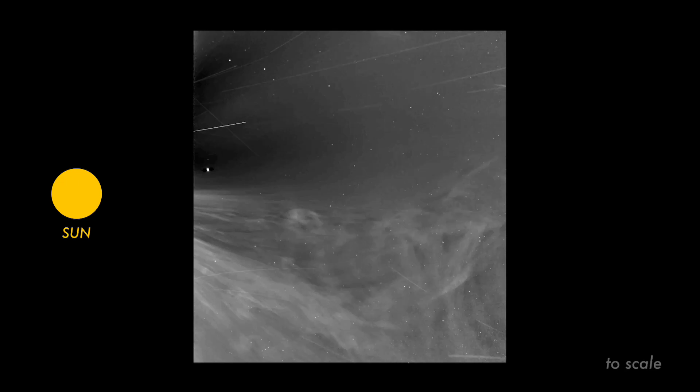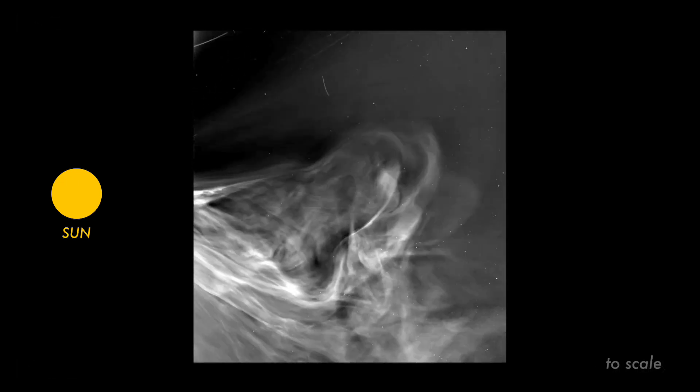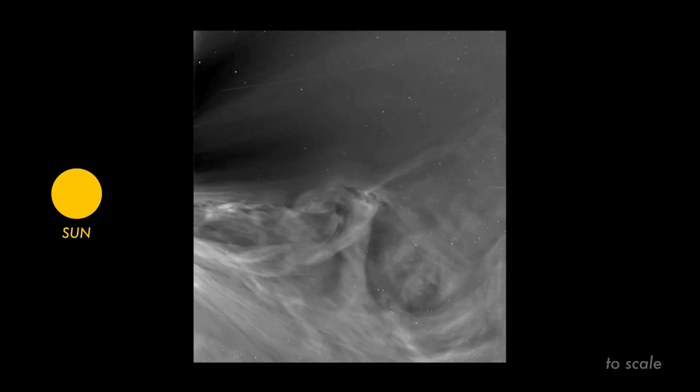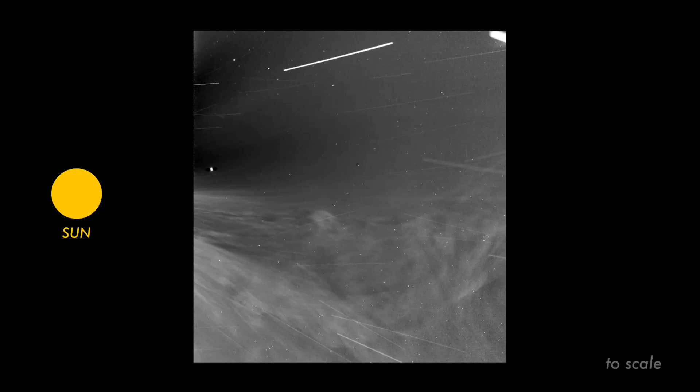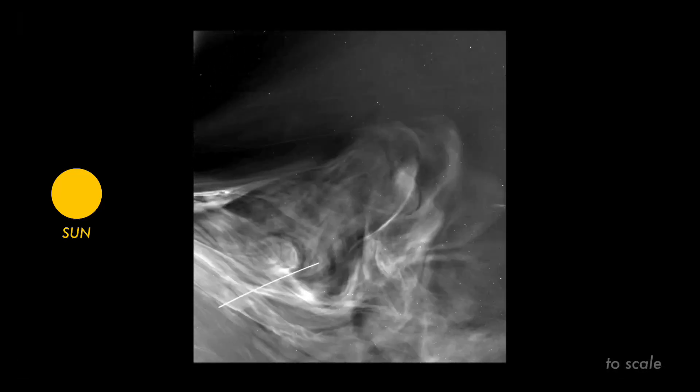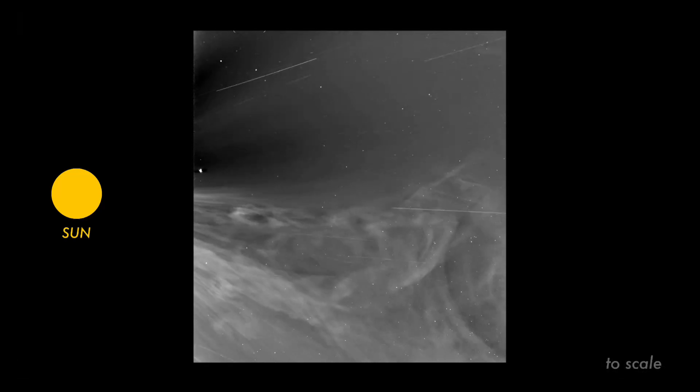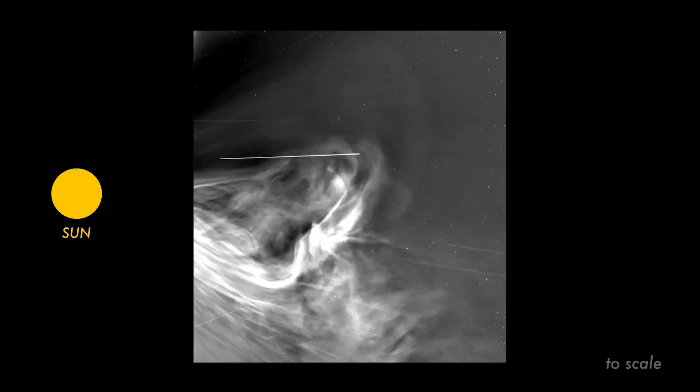Now this is a set of images taken by the Parker Solar Probe, which has been going since 2018 when it was launched and put into an orbit that brings it very close to the sun.